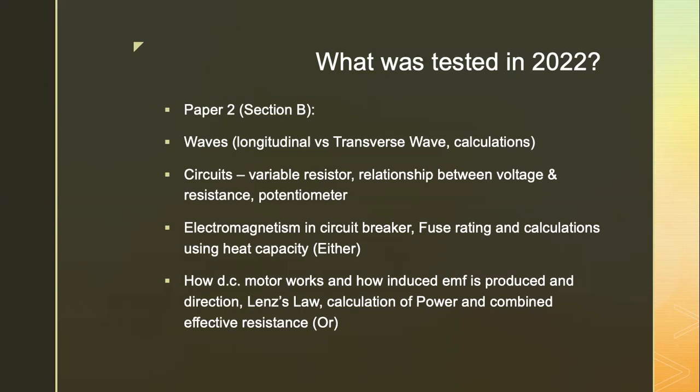The concepts tested were variable resistance, how it varies the resistance and hence the total resistance of the circuit, which affects the distribution of current in the parallel circuit. The relationship between voltage and resistance were explored, where students sketch a graph to show how voltage varies with changes in resistance, and some knowledge on potential meter. This was followed by an either-or question — one on electromagnetism in circuit breaker, fuse rating, and heat capacity calculations. The next question is on DC motor, how it works, how induced EMF is produced and its direction with relation to Lenz's law, and calculation of power and combined effective resistance.